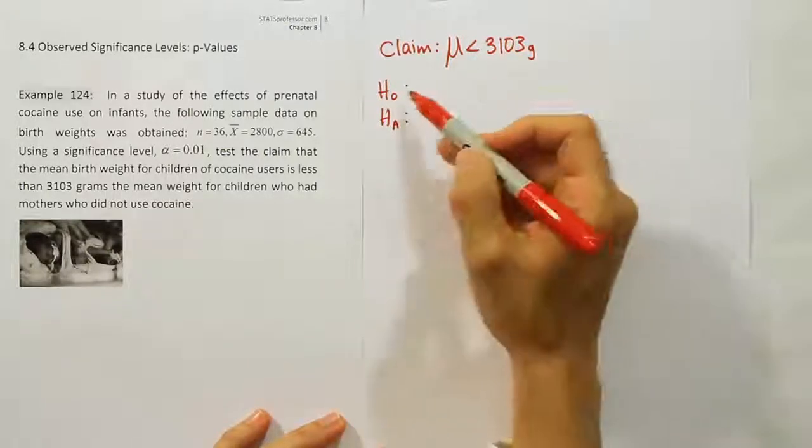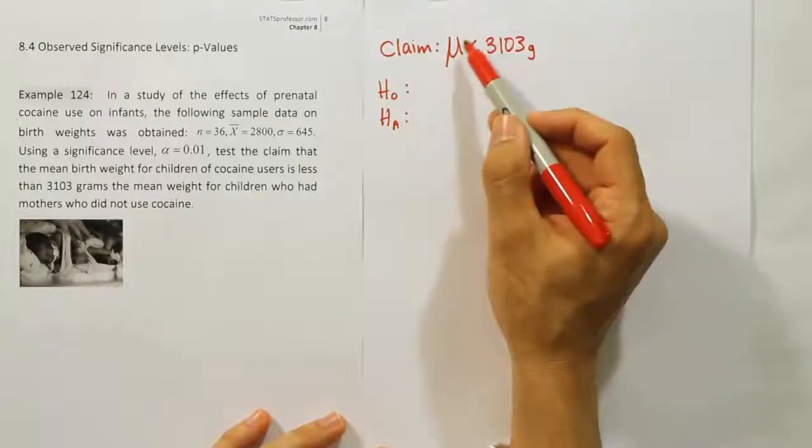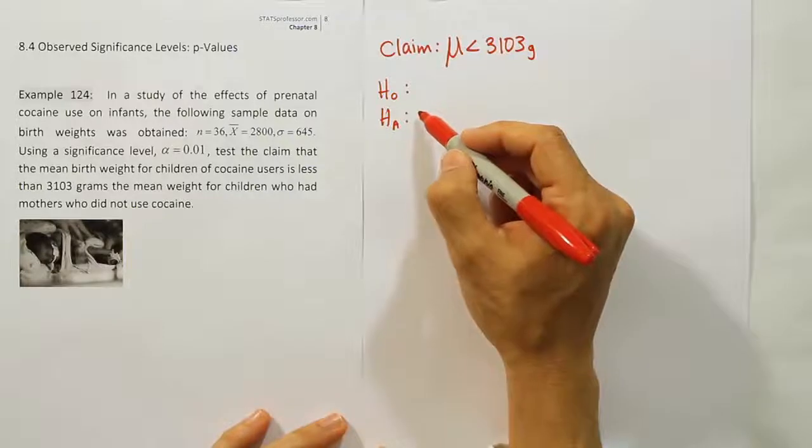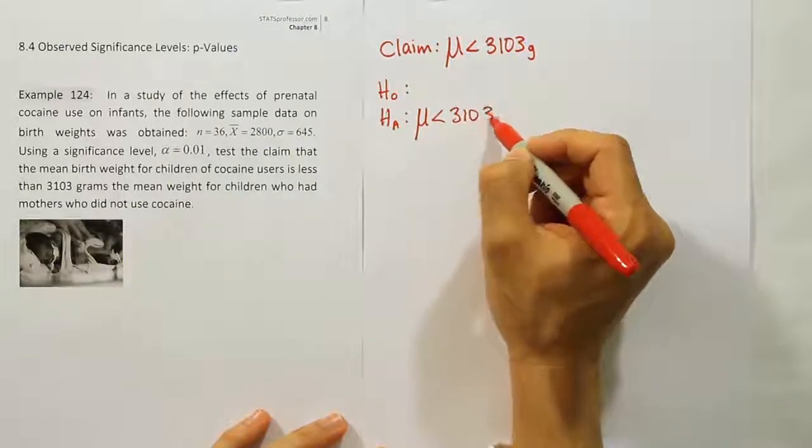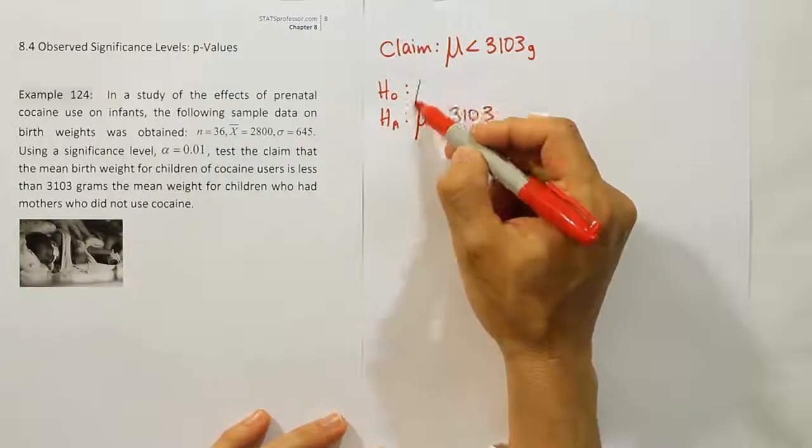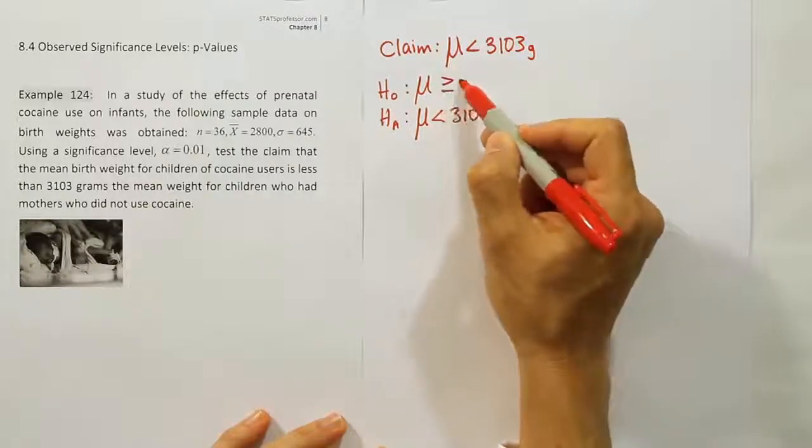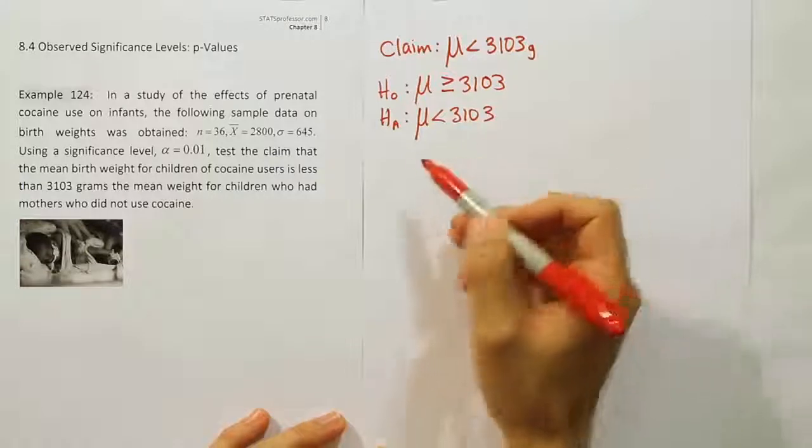The null hypothesis and alternative are found by looking at the claim and identifying what symbol it's using. If it's using a less than symbol, that's one of the alternative hypothesis's symbols. So we're going to say the claim and H_A are the same in this case. Now that means the null hypothesis must be the opposite idea. So if it's not less than 3,103, it must be greater than or equal to 3,103 grams.